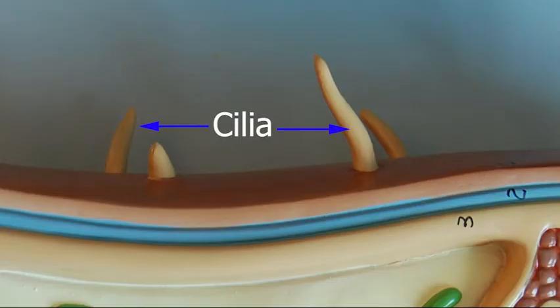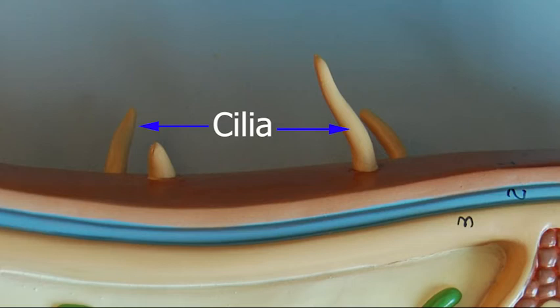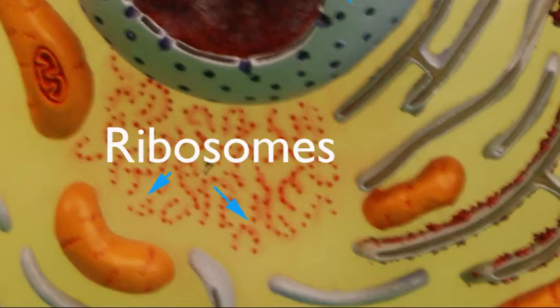Cilia are hair-like projections that extend outward from the cell surface and promote locomotion or propulsion in fluids. They are many and short. Chloroplasts produce food through the process of photosynthesis in the form of glucose in plants and plant-like cells. Ribosomes are organelles not bound by membranes that consist of RNA and protein, and they are responsible for protein synthesis.